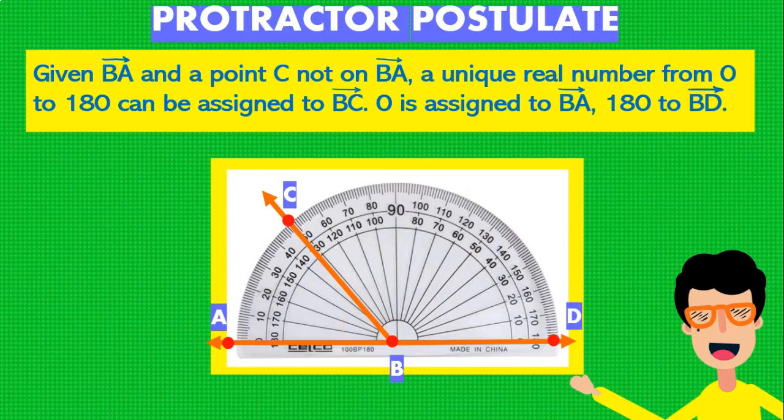Given the ray BA and a point C not on the ray BA, a unique real number from 0 to 180 can be assigned to BC. 0 is assigned to BA and 180 to BD.